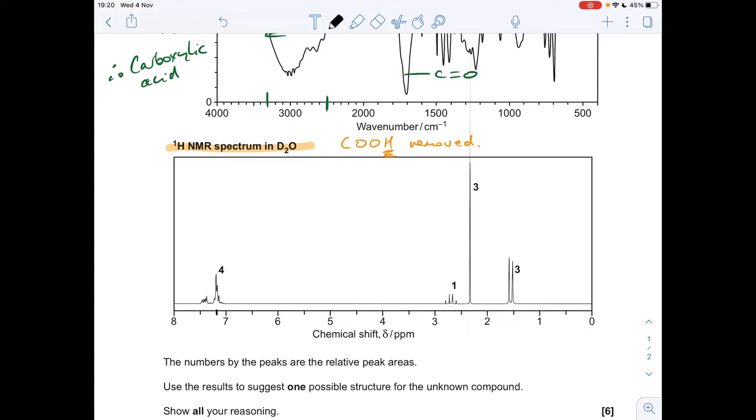So you go to your data sheet, now remember the OH proton's been removed, so that's the only other option other than the aromatic protons. So what we've got here are aromatic protons, and the peak area four means that there must be four of them.